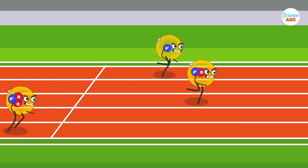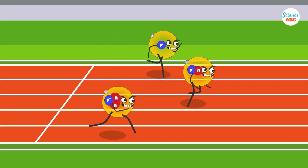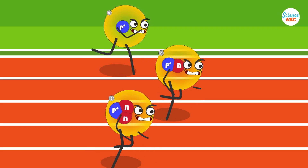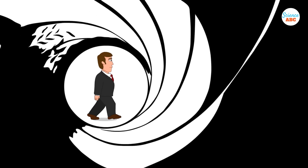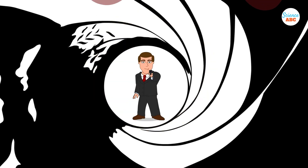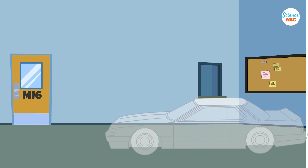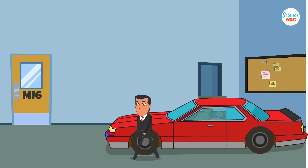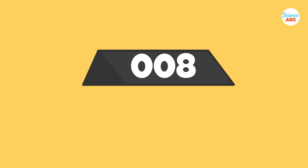When an element has two or more forms that contain the same number of protons but different numbers of neutrons, we refer to them as isotopes. Let me explain this with a James Bond analogy. Imagine working as a secret agent for your country. To keep your identity safe, you have been assigned a codename — let's say 008.